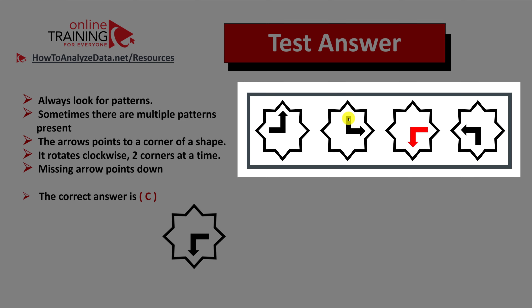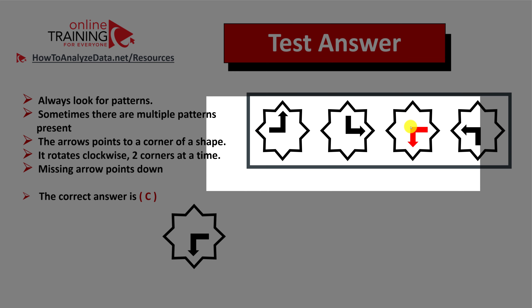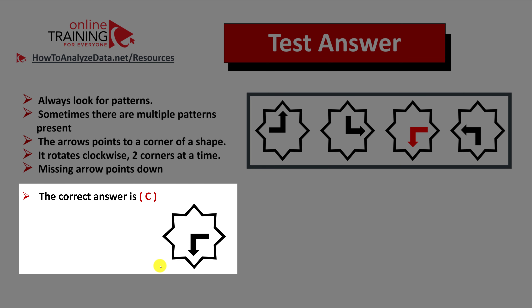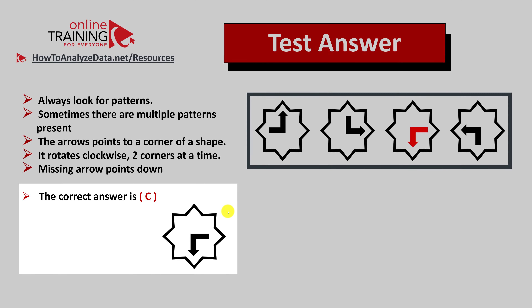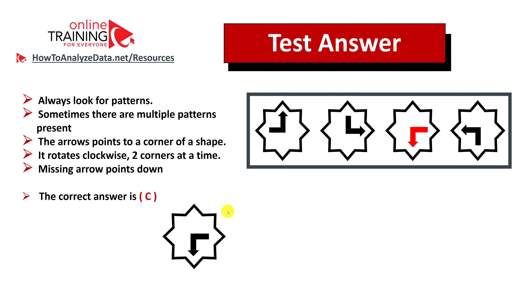The second shape points to 3 o'clock — it clicked two positions between the first and second shape. The next shape's arrow supposedly will point to 6 o'clock, because the last one points to 9 o'clock. You go two corners at a time. The correct answer is choice d — arrow pointing to 6 o'clock.